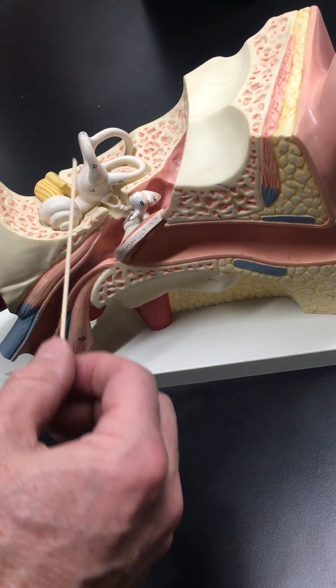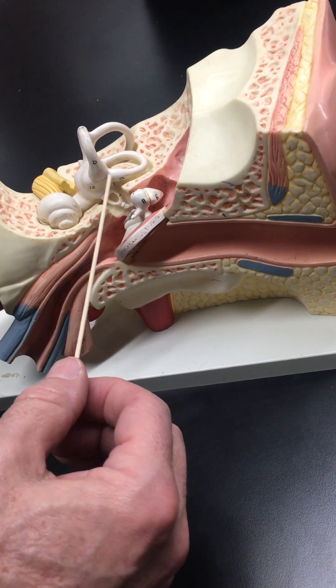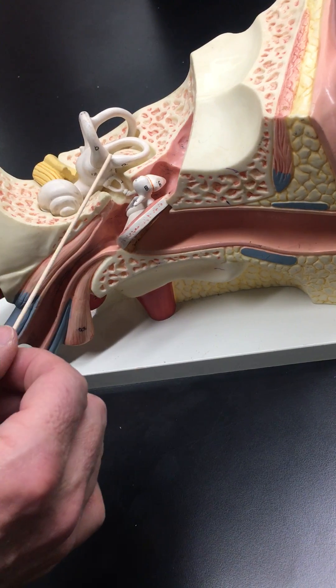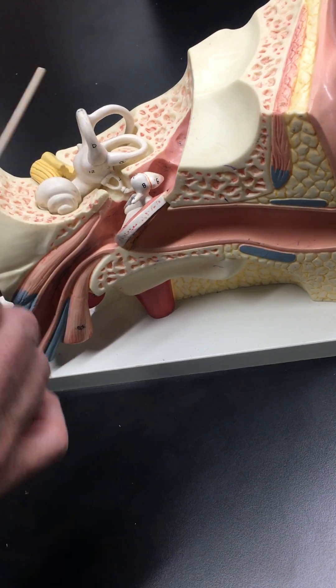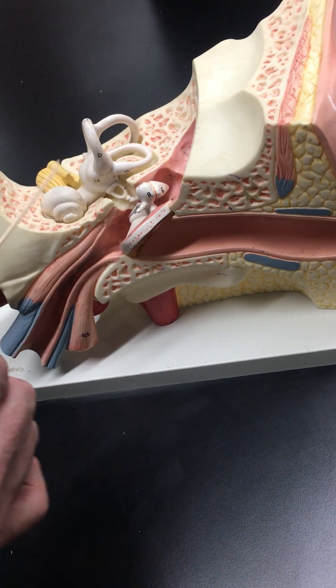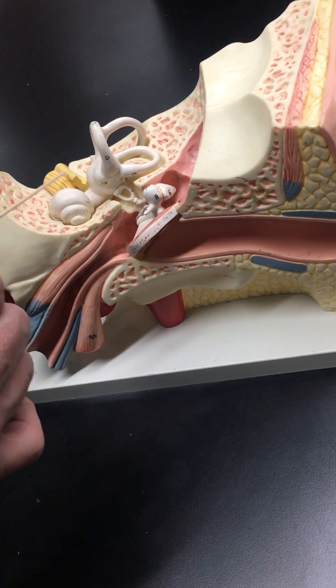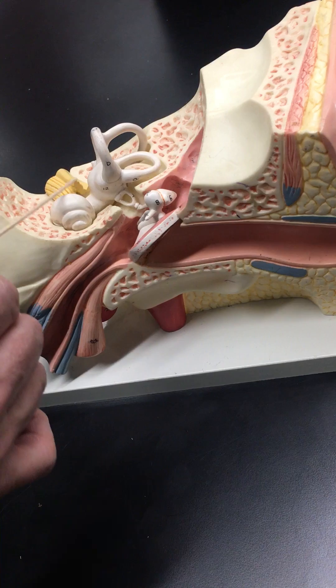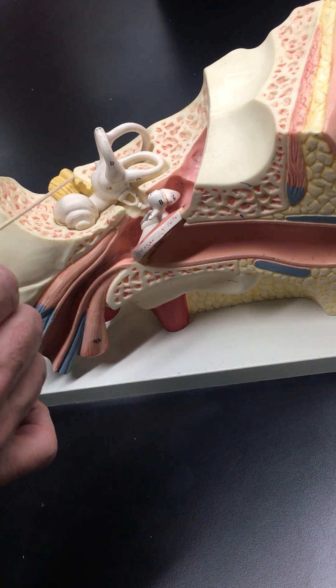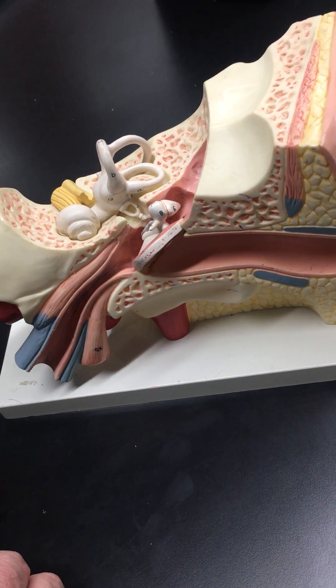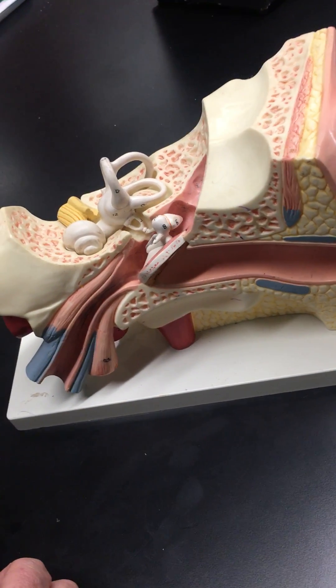Semicircular canals are for balance and equilibrium. As you move your head, the fluid and the small stones within it move around, stimulating the endings of the nerve—the vestibular portion of the vestibular cochlear—sending it to the brain for processing.